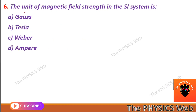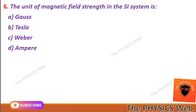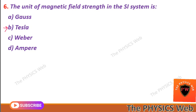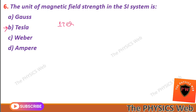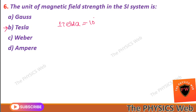Next, question six: the unit of magnetic field strength in the SI system is Tesla. So B is your correct option. Remember, one Tesla equals 10 to the power 4 Gauss.